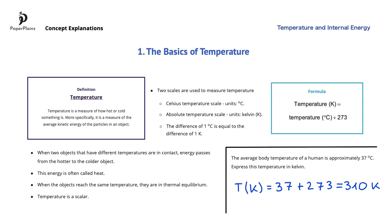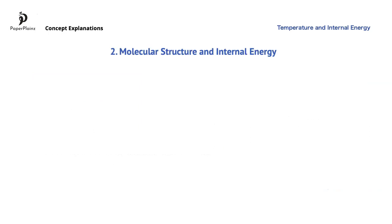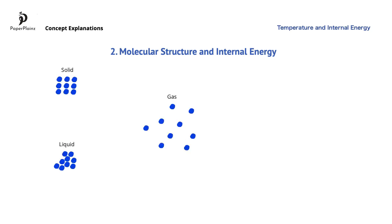Let's move on to molecular structure and internal energy. Molecules in a solid are close to each other and vibrate in fixed positions. Because of this, a solid has definite volume and definite shape. For example, you cannot easily change the volume and the shape of a metal cube.